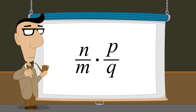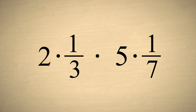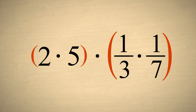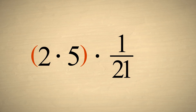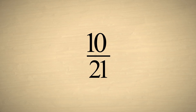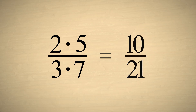Let's do this one more time using specific numbers. We start by splitting each common fraction into an integer times a unit fraction. Then, using the commutative and associative properties, we rearrange the factors so that the two numerators are grouped together and the two unit fractions are grouped together. We multiply the unit fractions by multiplying their denominators, and we multiply the two and five, which were the numerators. Ten times one twenty-first is ten twenty-firsts. So to multiply two-thirds times five-sevenths, we take the shortcut of multiplying the numerators two and five, and the denominators three and seven, giving a result of ten twenty-firsts.